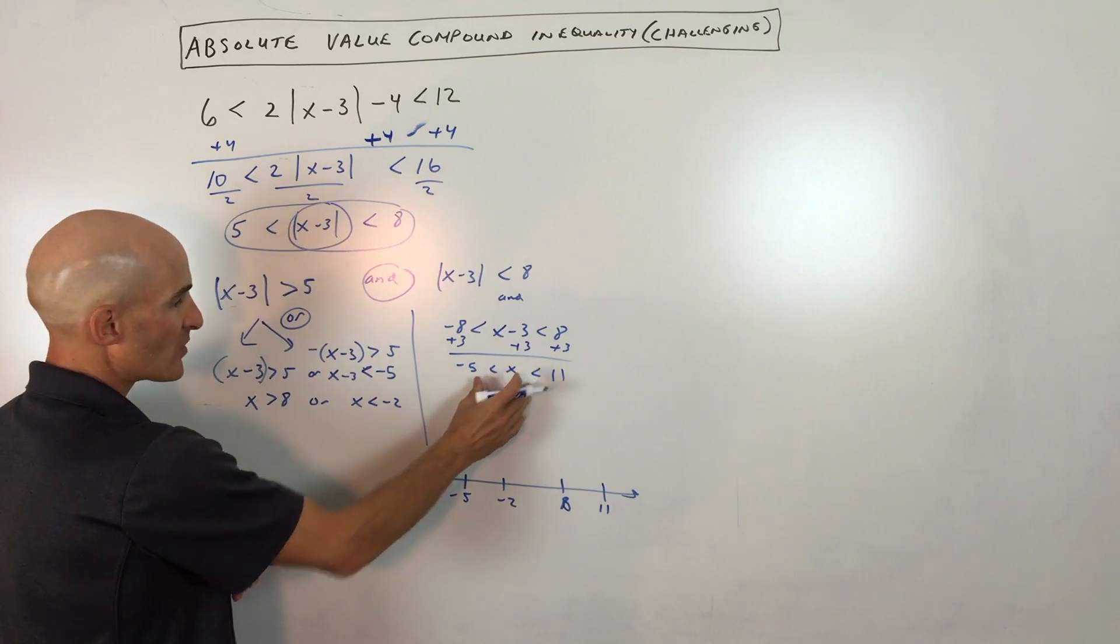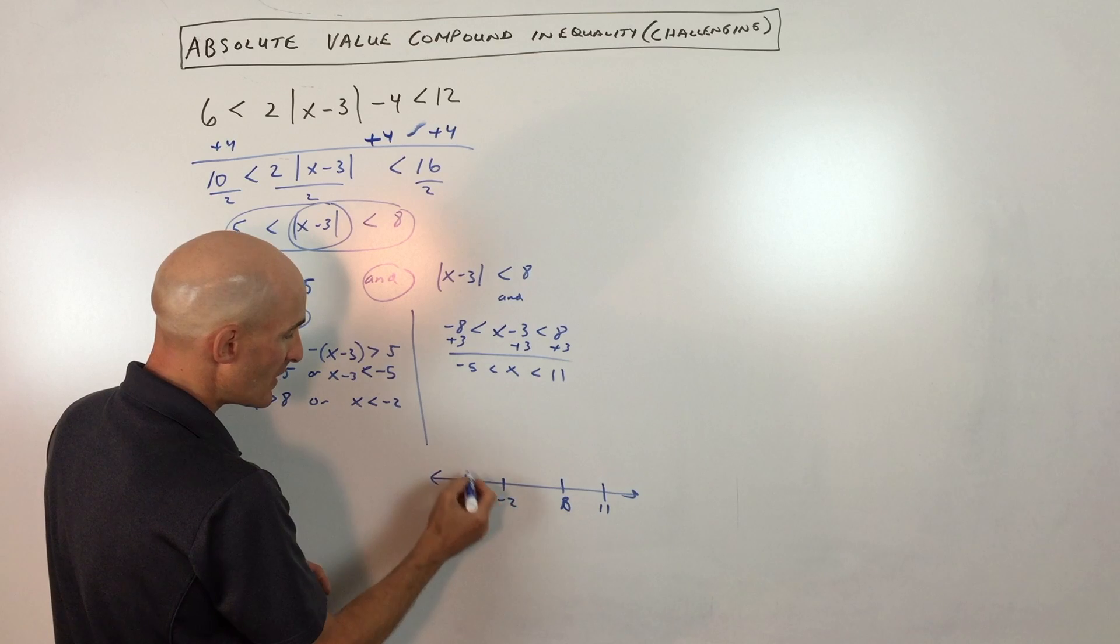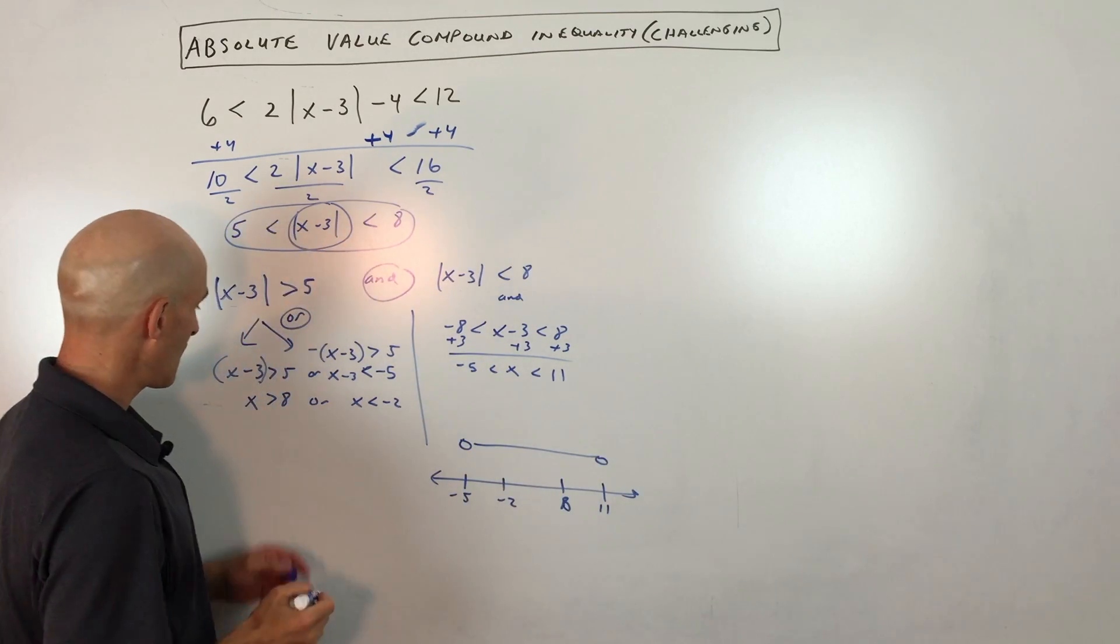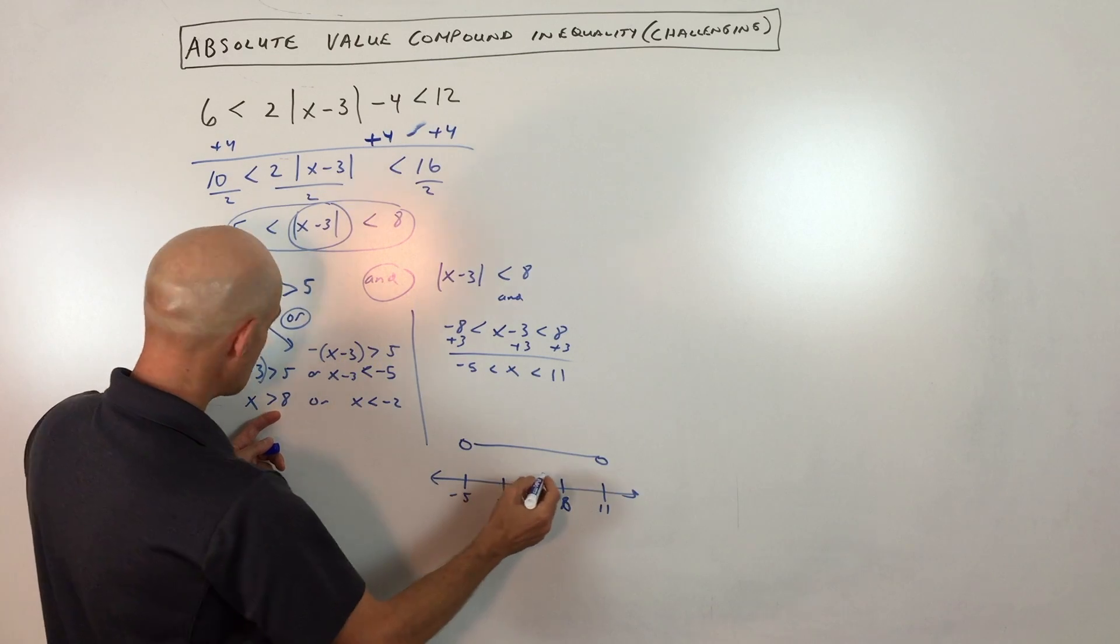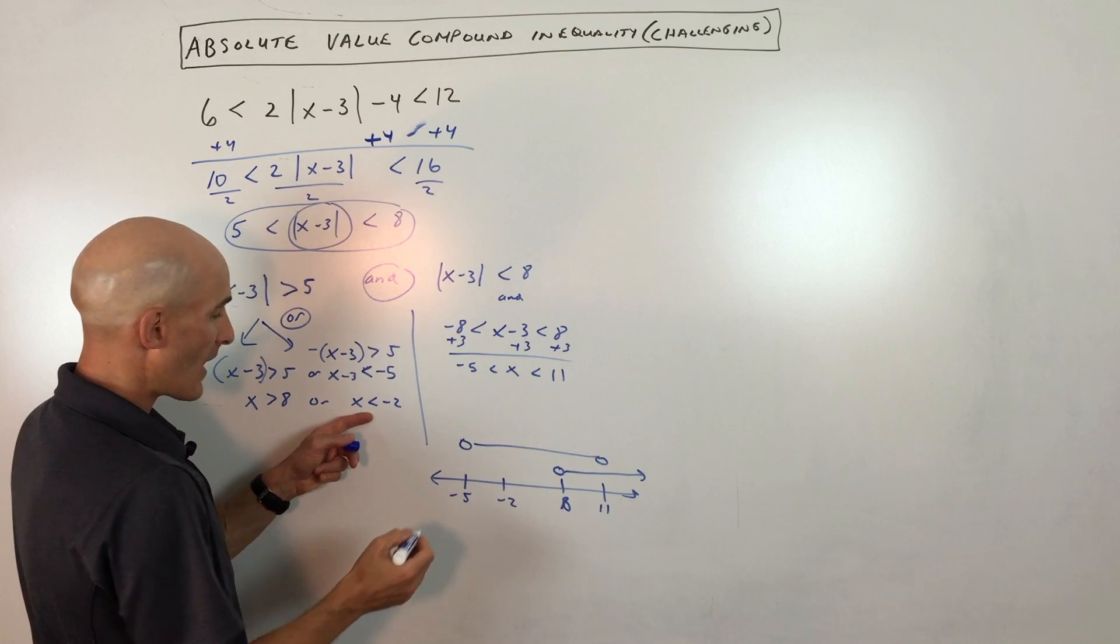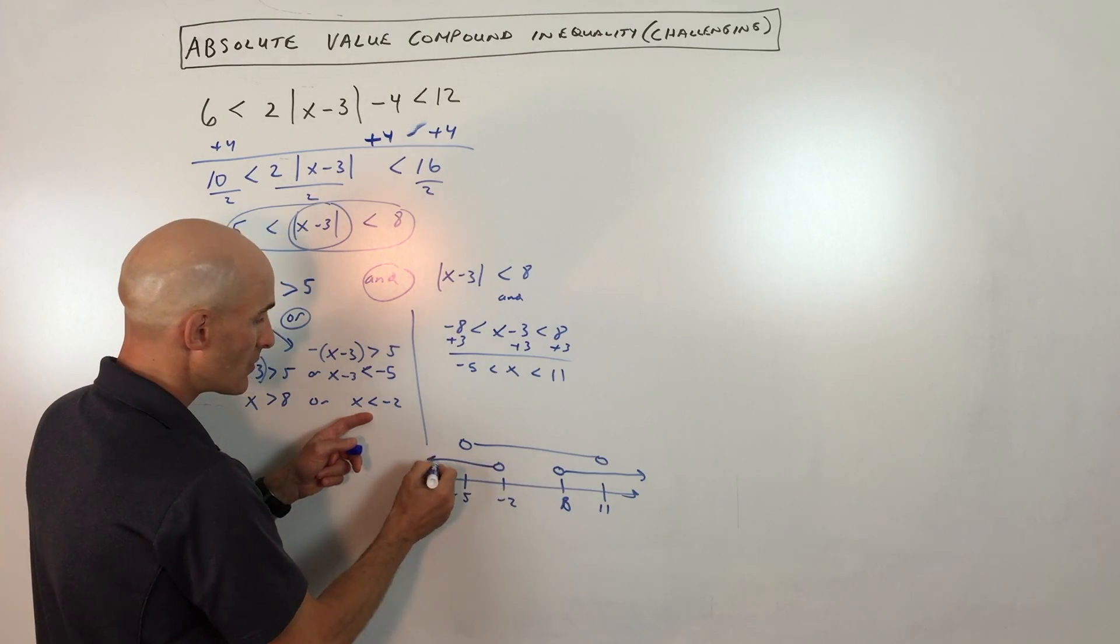So let's graph this one here first. So x is in between negative 5 and 11, right? And then over here we have x is greater than 8, or x is less than negative 2.